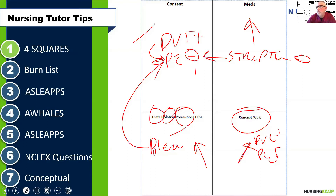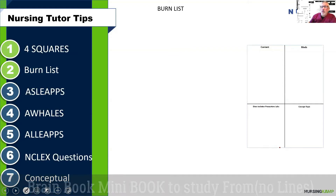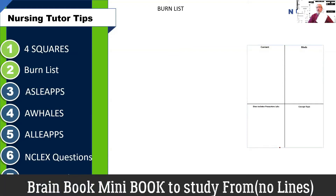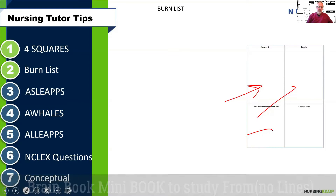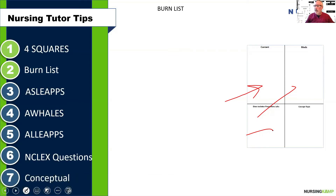As you listen to the lecture using four squares, you want to look at and isolate what you have. But what do you do with that content? That's where the burn list comes in, which is usually kept in a brain book. This brain book is basically a small book where you transcribe content from your lecture notes. You can get these little books anywhere — a craft store or online — put it in your pocket, and study the content during clinical or free time.